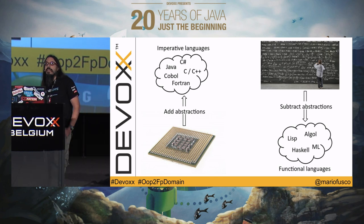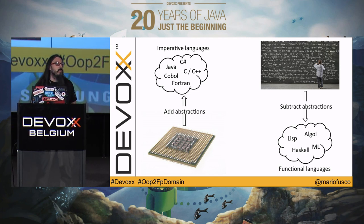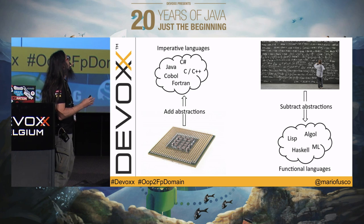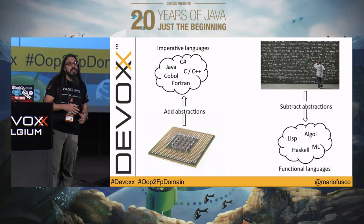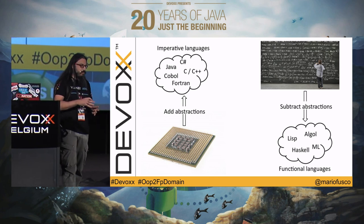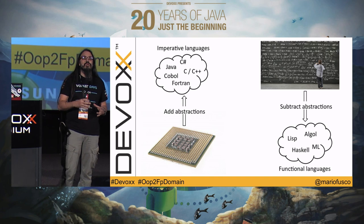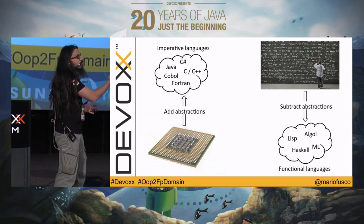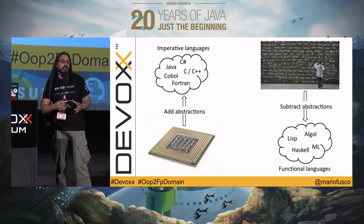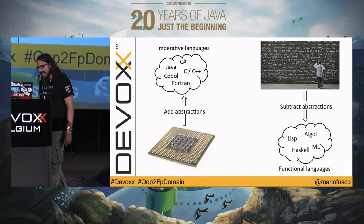So we had this first family of imperative languages born in this way. And on the other side, we started from the lambda calculi, from mathematics, from category theory. We subtracted a few abstractions but never sacrificed the beauty of the language, and we ended up with functional languages. At the beginning of the century, languages on the left were designed for enterprise-level software, while languages on the right were designed to produce academic papers.